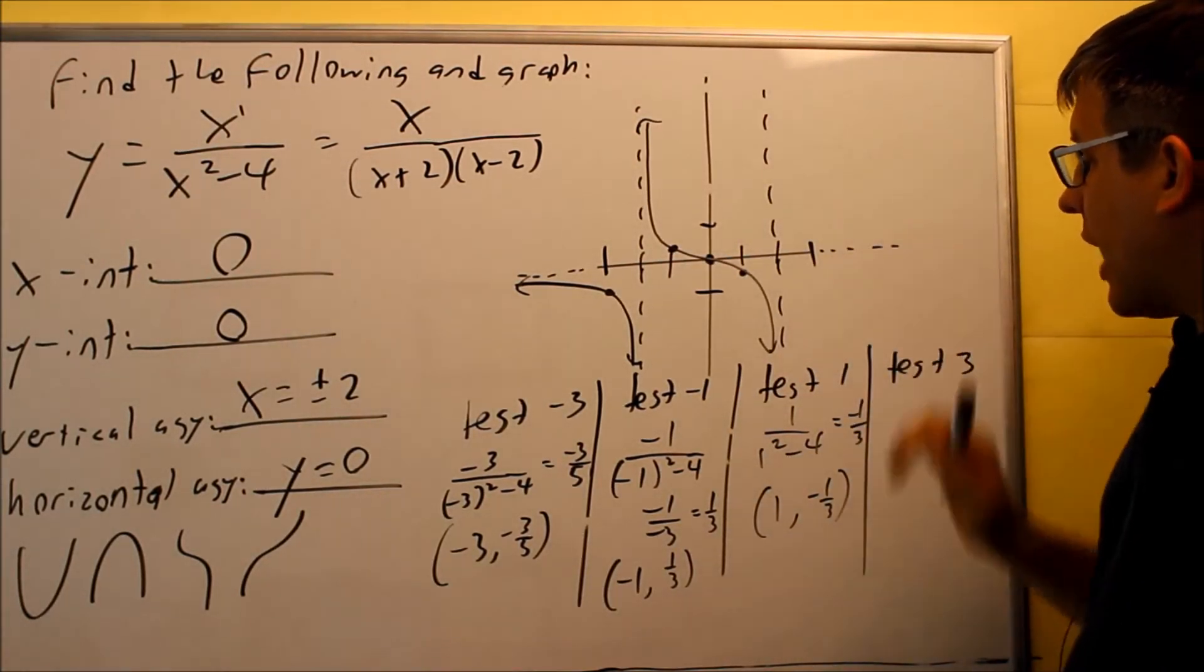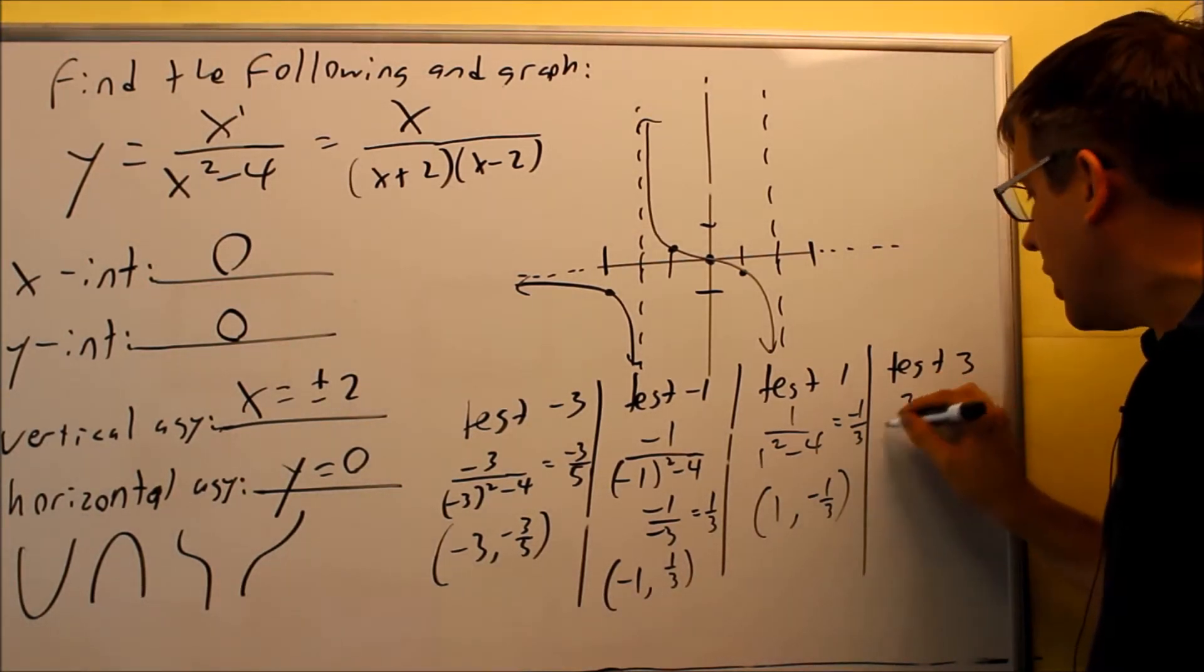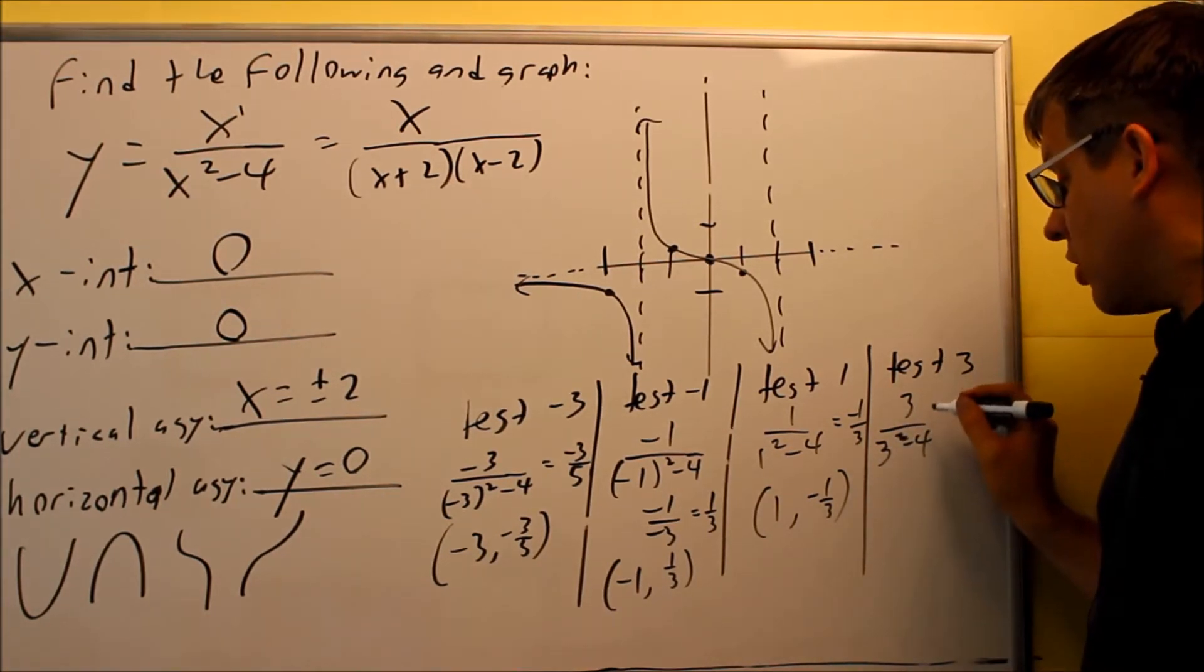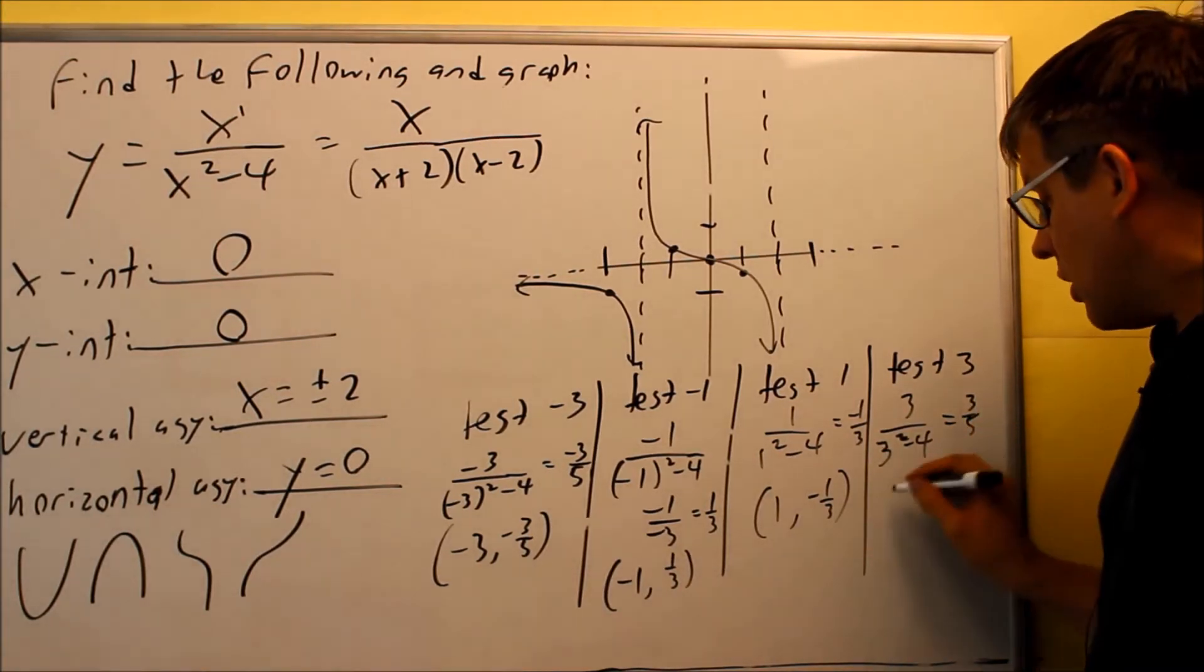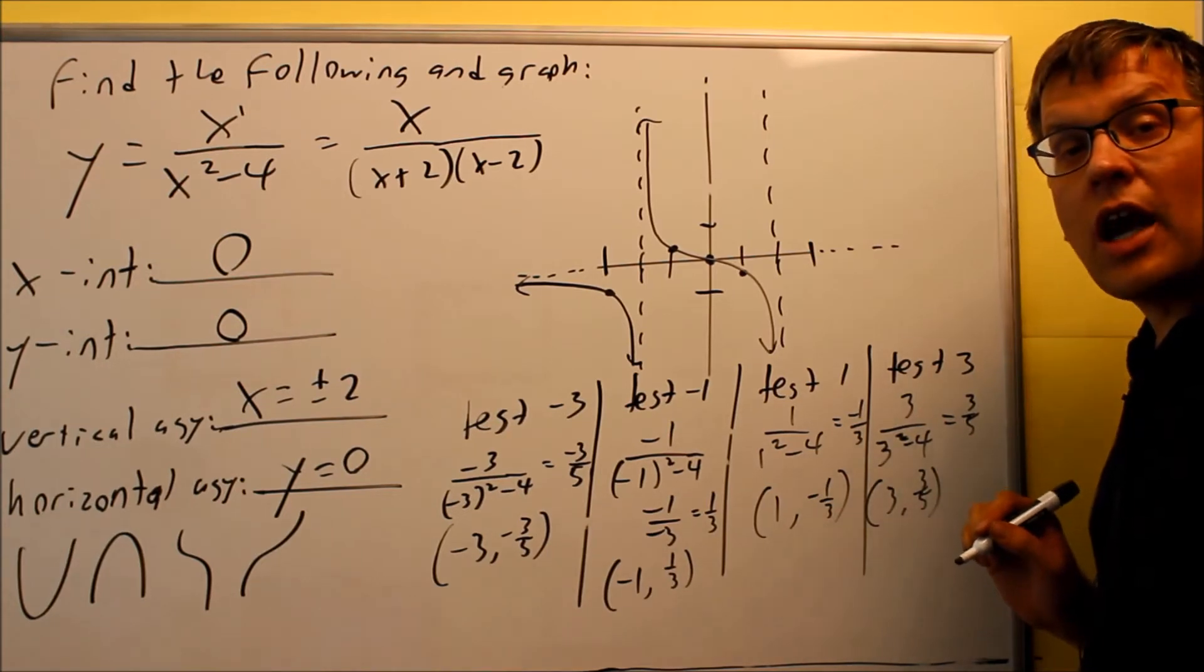Then finally, I'm going to test the last one here. I want to put in a 3. So if I put 3 in there, that's 3 over 3 squared minus 4. And that means that you're going to get 3 fifths. So 3 fifths would be that one. So 3 and 3 fifths would be the actual coordinate.